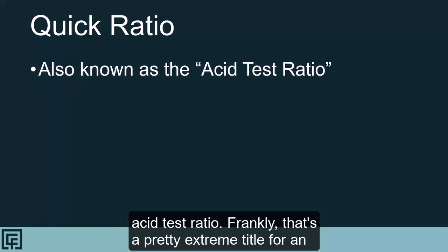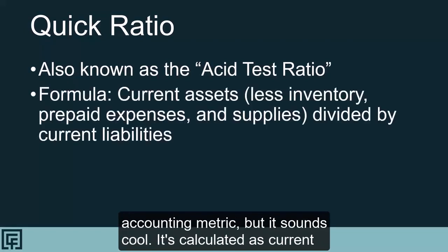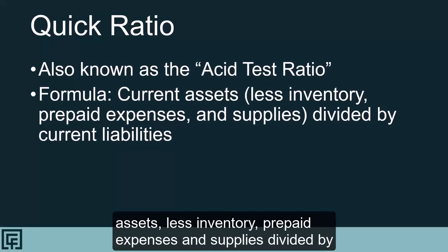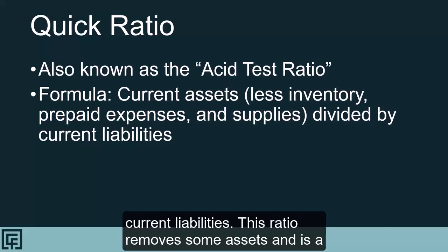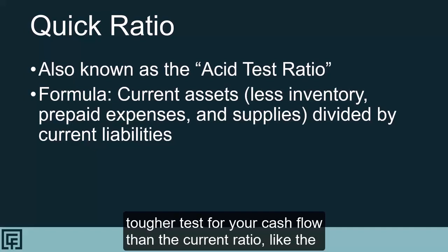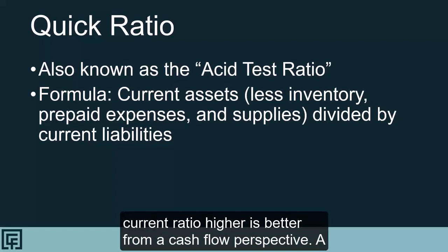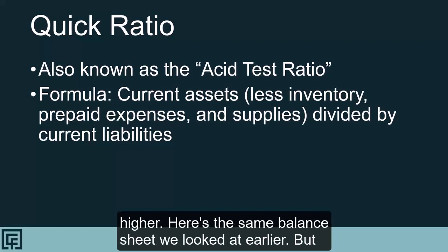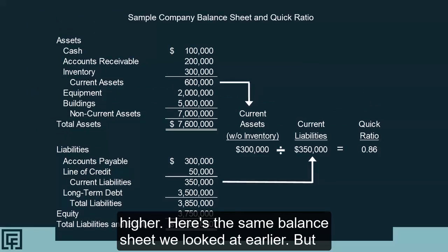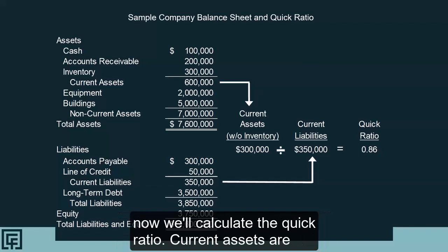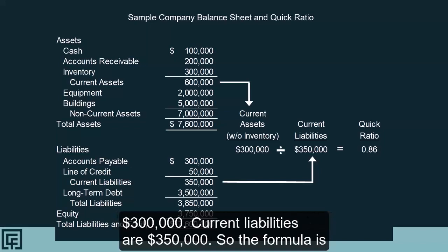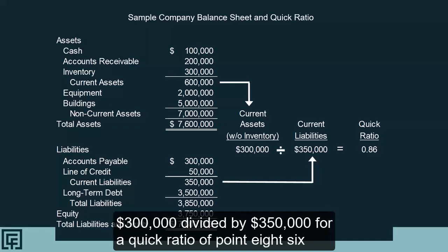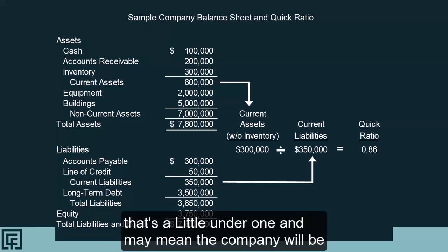The quick ratio is known as the acid test ratio — a pretty extreme title for an accounting metric, but it sounds cool. It's calculated as current assets, less inventory, prepaid expenses, and supplies, divided by current liabilities. This ratio removes some assets and is a tougher test for your cash flow than the current ratio. Like the current ratio, higher is better; a common recommendation is for this to be equal to 1 or higher. Using the same balance sheet: current assets are $600,000, reduced by inventory of $300,000, giving $300,000 divided by current liabilities of $350,000, for a quick ratio of 0.86. That's a little under 1 and may mean the company will be tight on cash in the future.